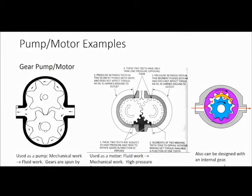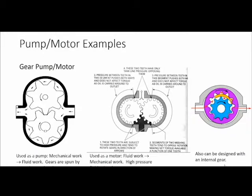The one on the right is a slight variance — an internal gear pump. You have an internal gear spinning, with a little channel way which allows fluid to go over the top of the gear, getting drawn in between the inner and outer gear as you spin the motor. It's the same principle but in a more compact form.